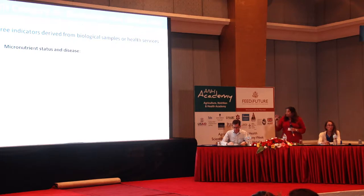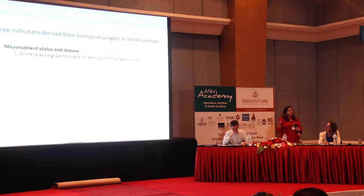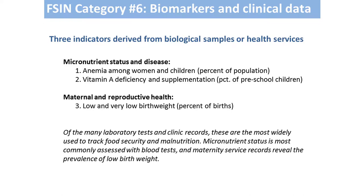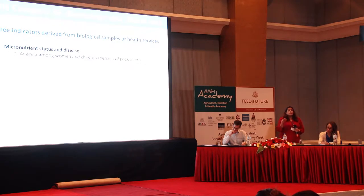The first area is biomarkers for understanding micronutrient status and disease. The first indicator is anemia — you estimate the percent of the population, usually looking at women of reproductive age, women in pregnancy, and young children under five or under two, estimating the prevalence of anemia. The most common marker used for assessing anemia in a national survey is hemoglobin.